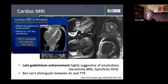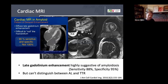Cardiac MRI is extremely useful, providing better anatomical pictures with classic characteristic late gadolinium enhancement. However, cardiac MRI is not 100% sensitive or specific for amyloidosis, and it cannot distinguish between AL and ATTR types. But if your echocardiogram is equivocal, it is a very helpful additional tool.